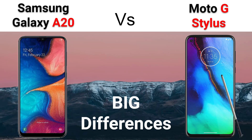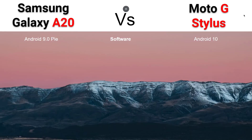We always start with the software. The Moto G Stylus came out this year, 2020. The A20 came out last year. So the A20 does come with Android 9, and the G Stylus does have the new Android 10 software. So it takes the win in that category, having a newer version of Android.